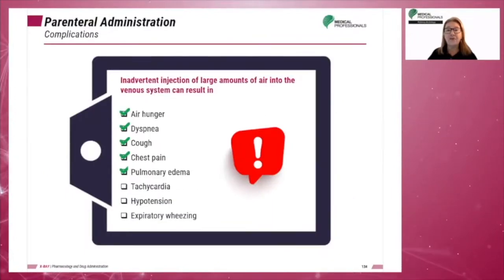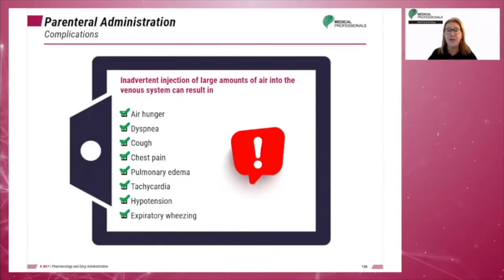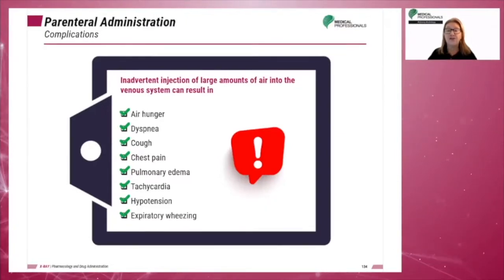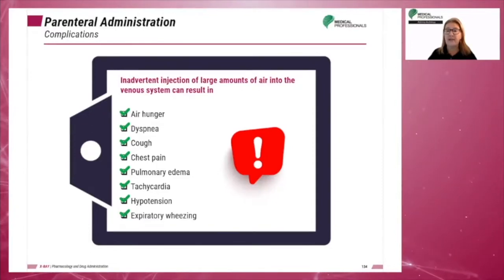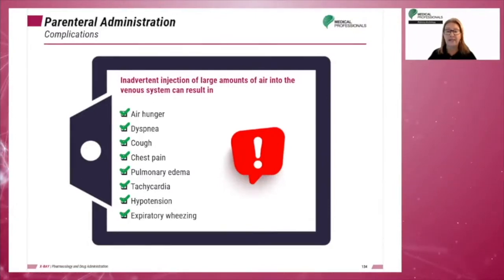Inadvertent injection of large amounts of air into the venous system can result in air hunger, dyspnea, cough, chest pain, pulmonary edema, tachycardia, hypotension, and expiratory wheezing.